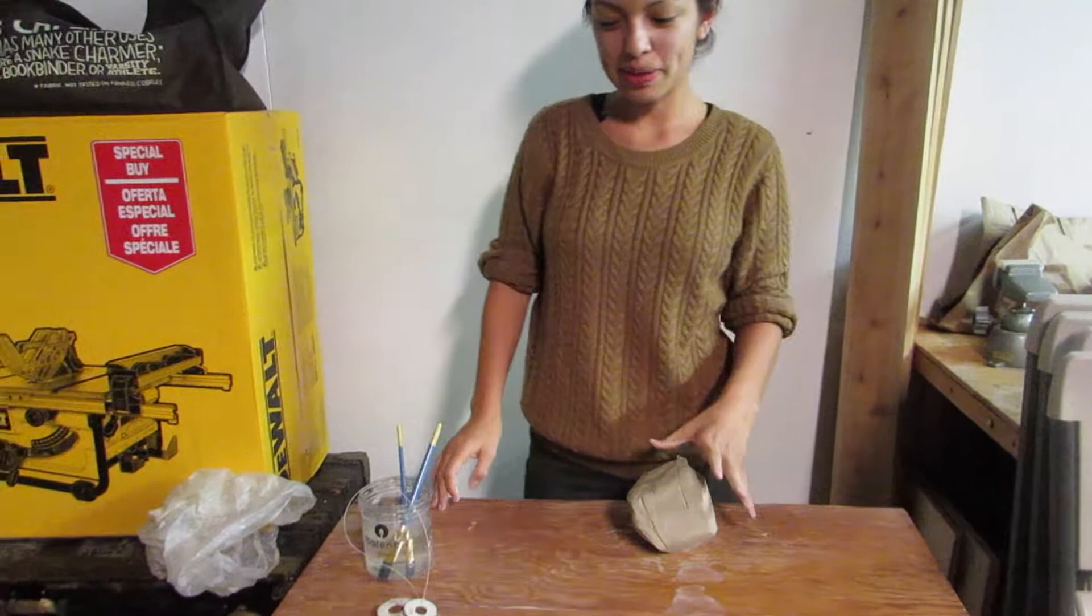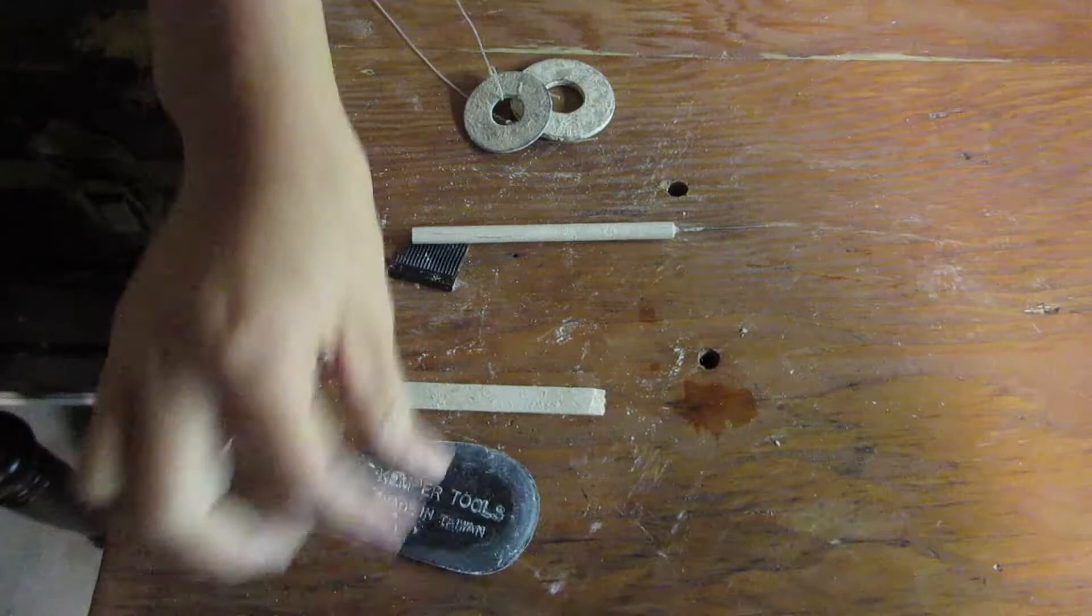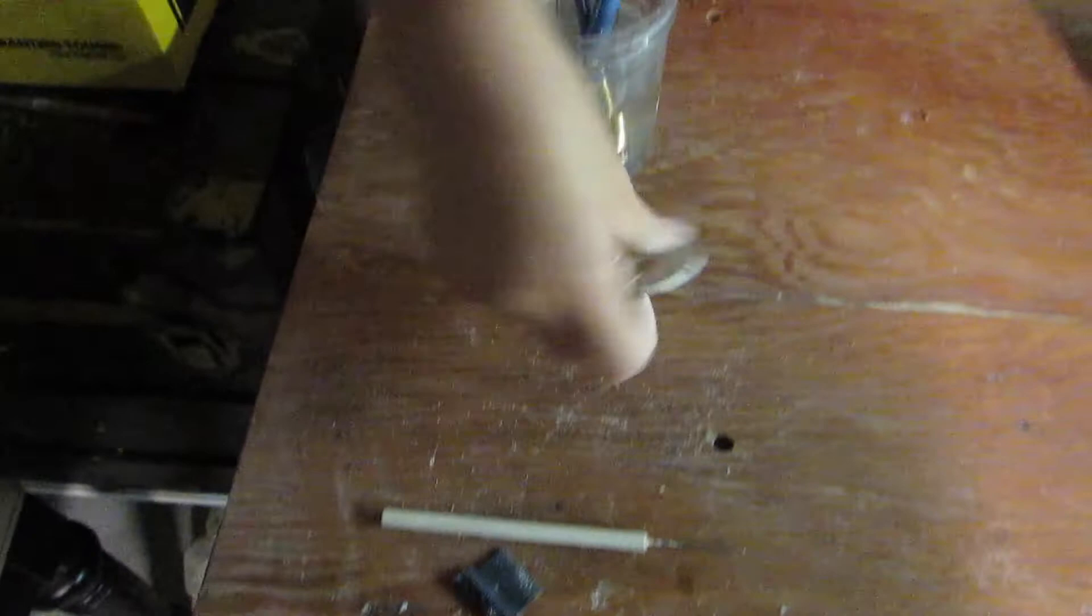Today we're going to be doing a two pinch pot pumpkin. These are the tools that you're going to need: a rib, popsicle stick, scratchy tool, needle tool, and a fishing line, and some water and some brushes at the end to smooth it out.